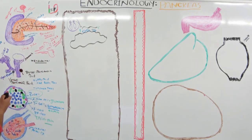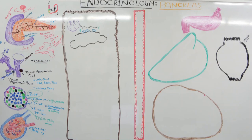Looking at this structure, it has an N-terminal. The pink region is called your signal sequence. In green is your B chain, the red is your C chain, and the black is your A chain. Together, this is known as pre-proinsulin.